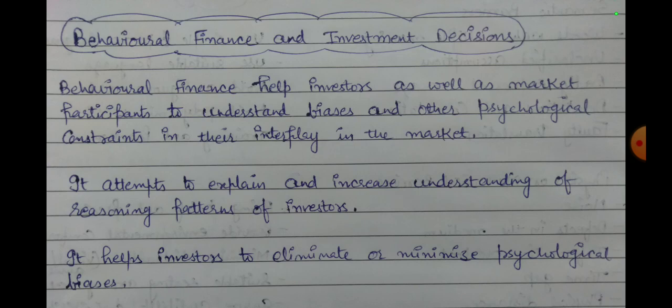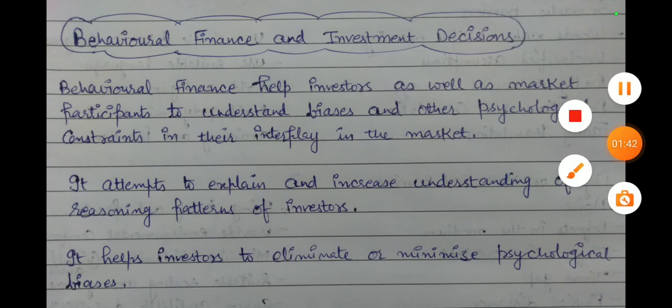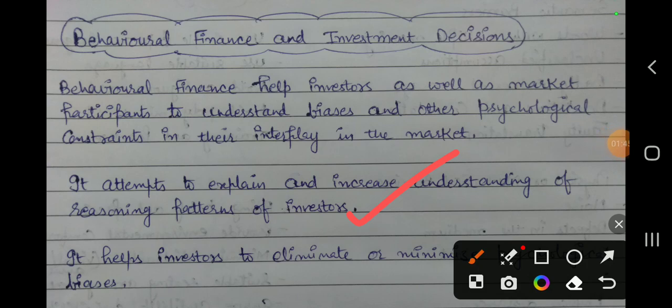As we all know, decision making is a complex process since it involves choosing the best alternative among a number of possible courses of action after careful evaluation. Behavioral finance helps investors as well as market participants to understand biases and other psychological constraints in their interplay in the market. It attempts to explain and increase understanding of the reasoning patterns of investors and the emotional processes involved in decision making.